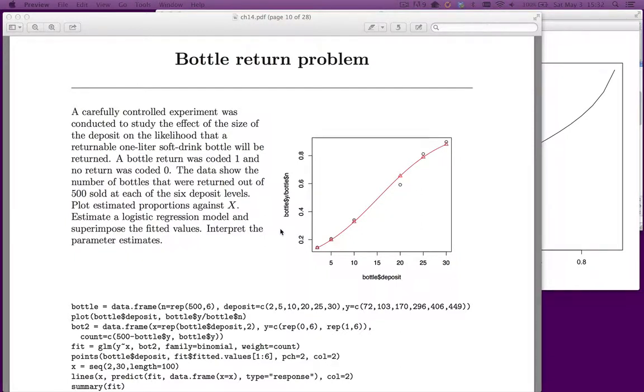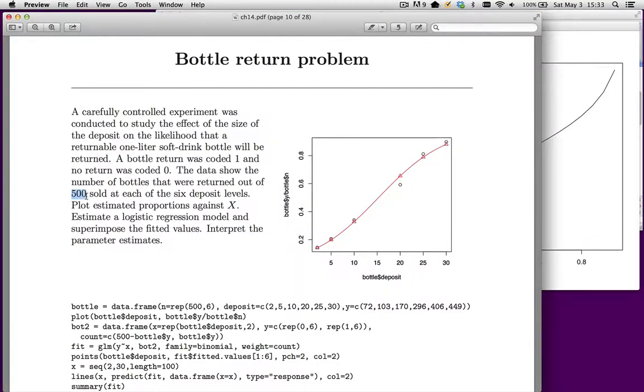We run an experiment. So we have different price or deposit levels, 2 cents, 5 cents, 10, 20, 25, and 30 cents per bottle. For each of those deposit amounts, we sell 500 bottles. Okay. So we sell 500 bottles. We observe the number that are returned.